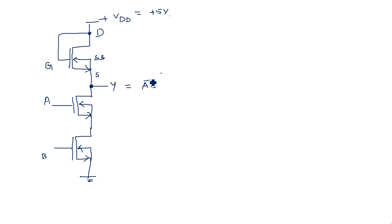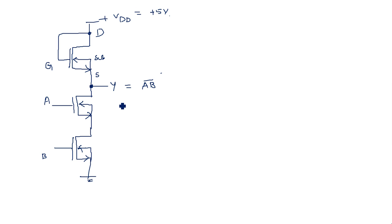The two NMOS transistors applied with the inputs are connected in series. One important thing: A and B do not have a specific position — there is no condition that A must be connected here and B must be connected there. You can take either at either position as you wish, but it definitely acts as a NAND operation.